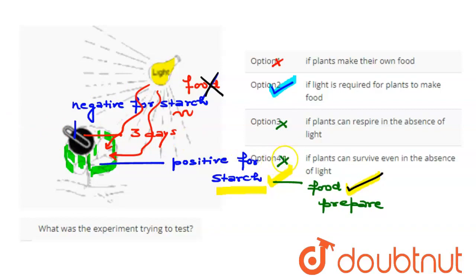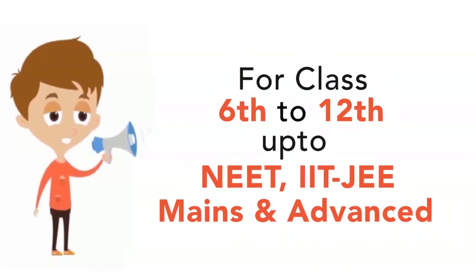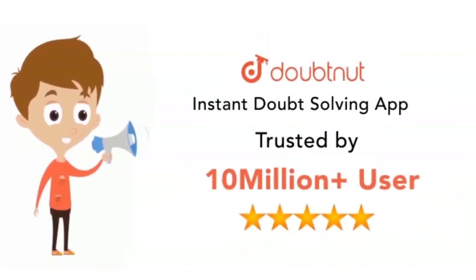Third option: if plants can respire in the absence of light - this option is wrong. Last option: if plants can survive even in the absence of light - this is also wrong. So the correct answer is option second.